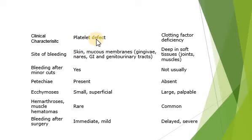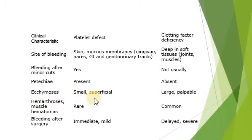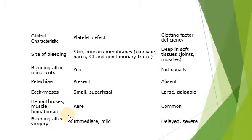Petechiae are usually present in cases of platelet deficiency, while absent in cases of clotting factor deficiency. Ecchymosis is a superficial discoloration of the skin due to bruising and is mostly present in platelet deficiency or platelet defects. However, hematomas are mostly present in clotting factor deficiency. Bleeding after surgery is very immediate in platelet deficiency, while it is delayed in clotting factor deficiency.